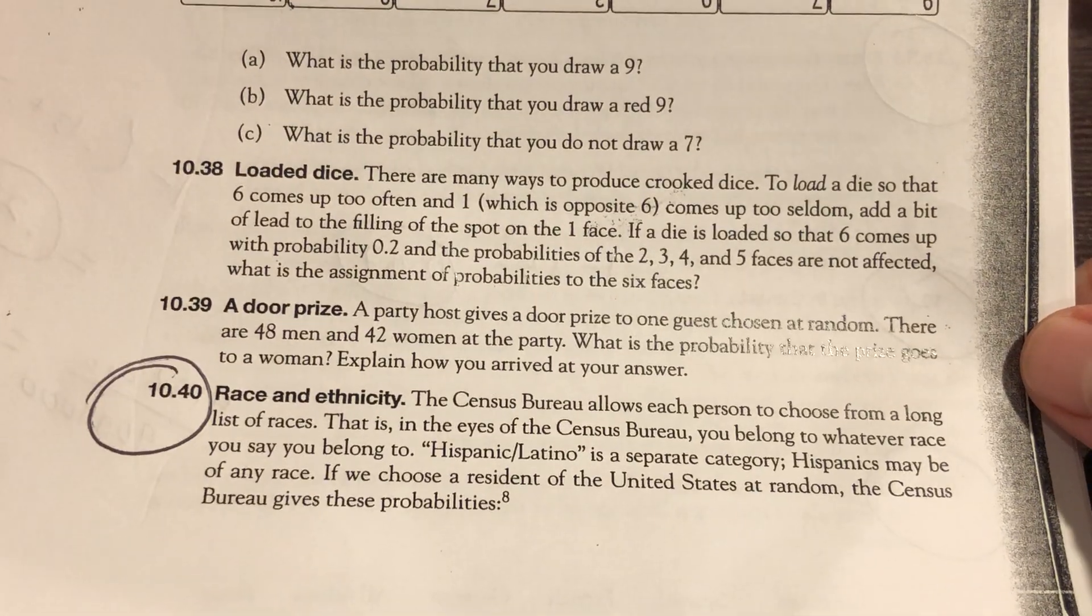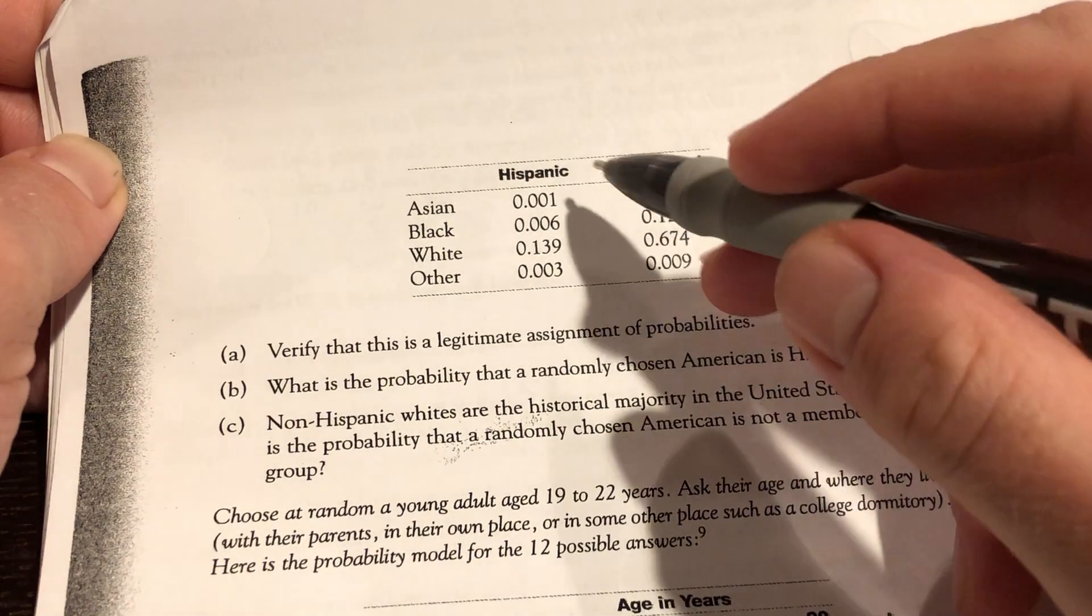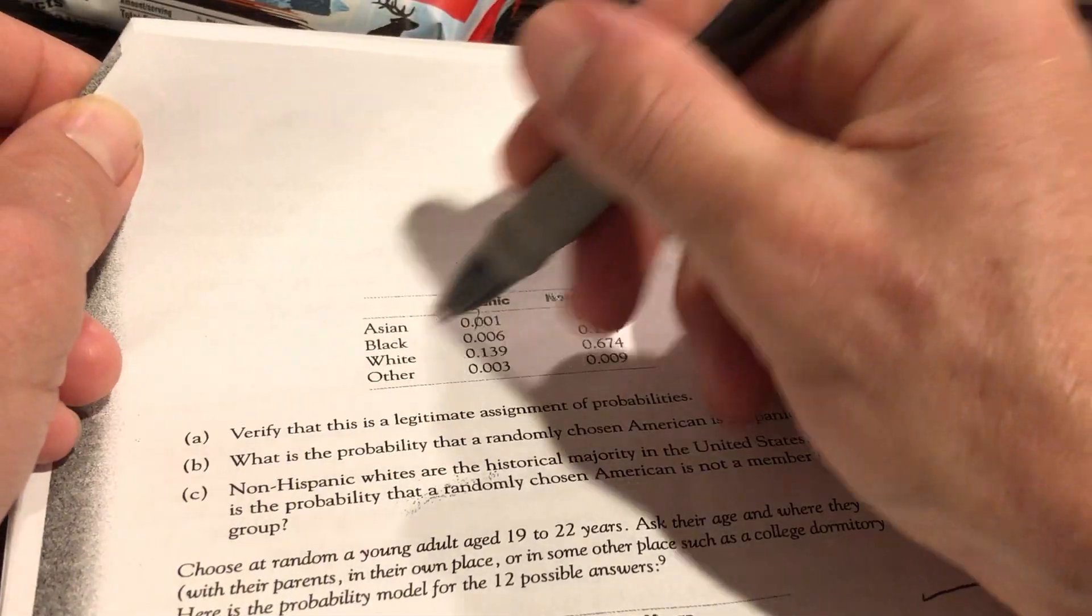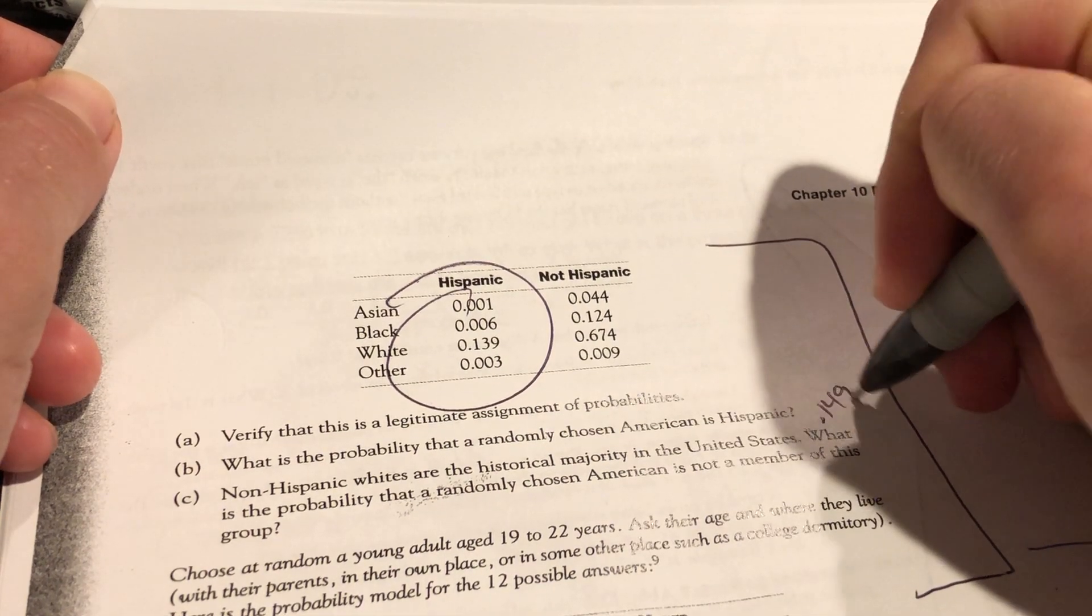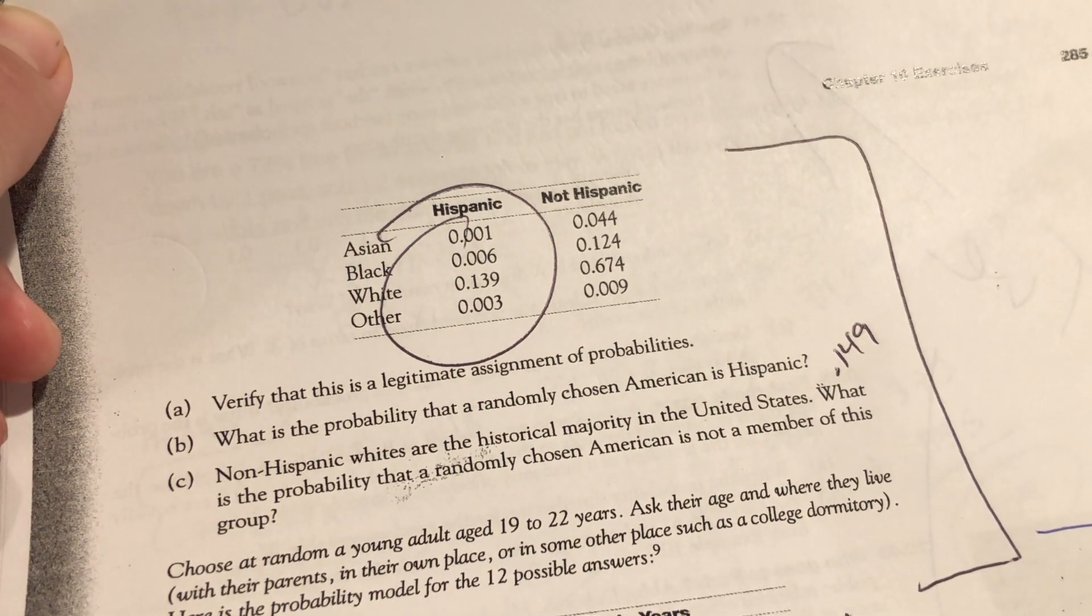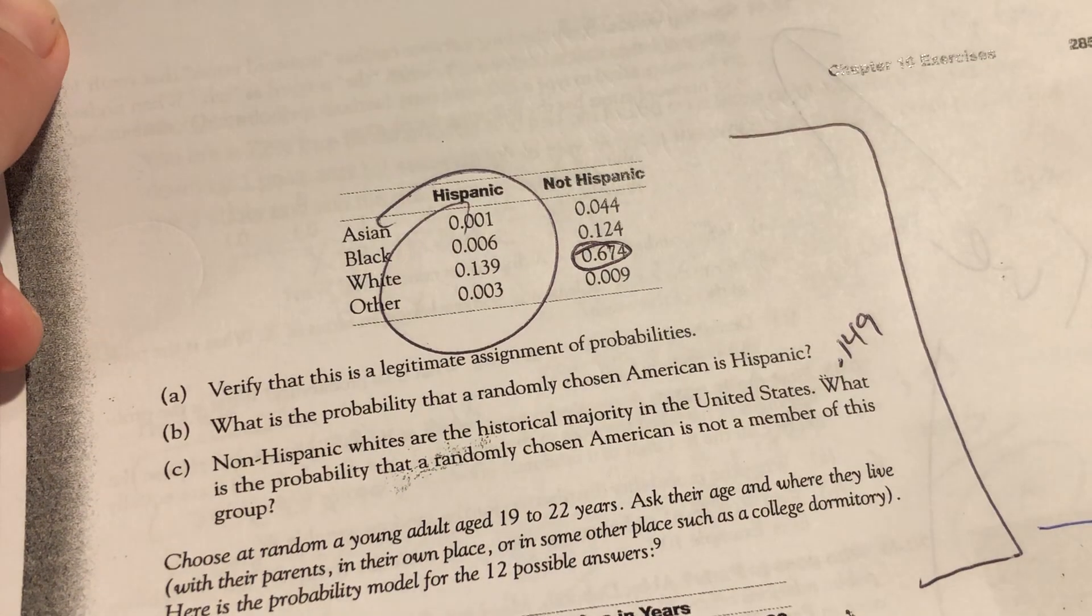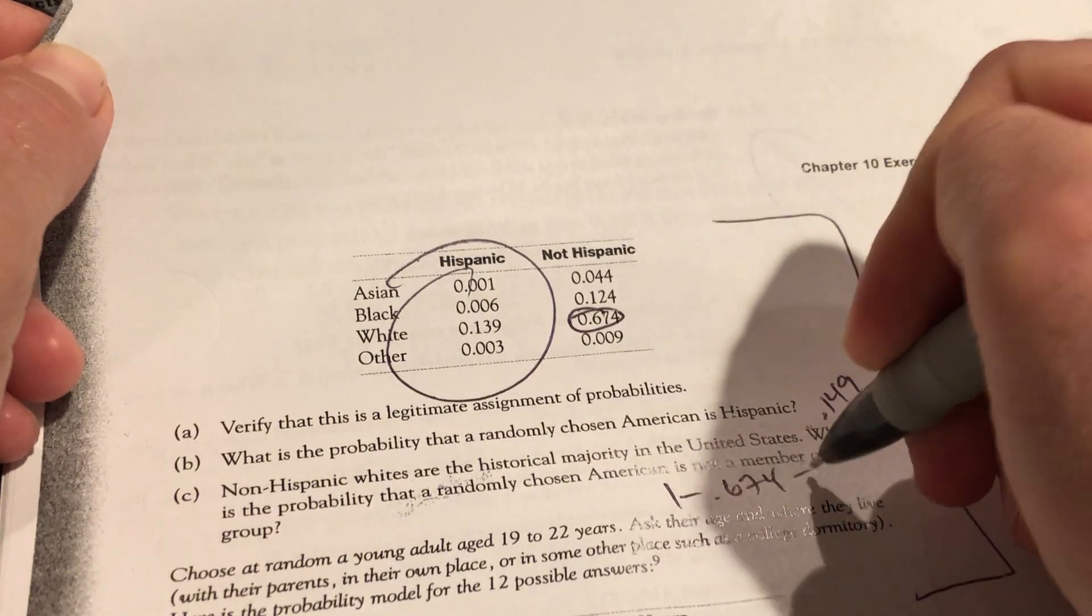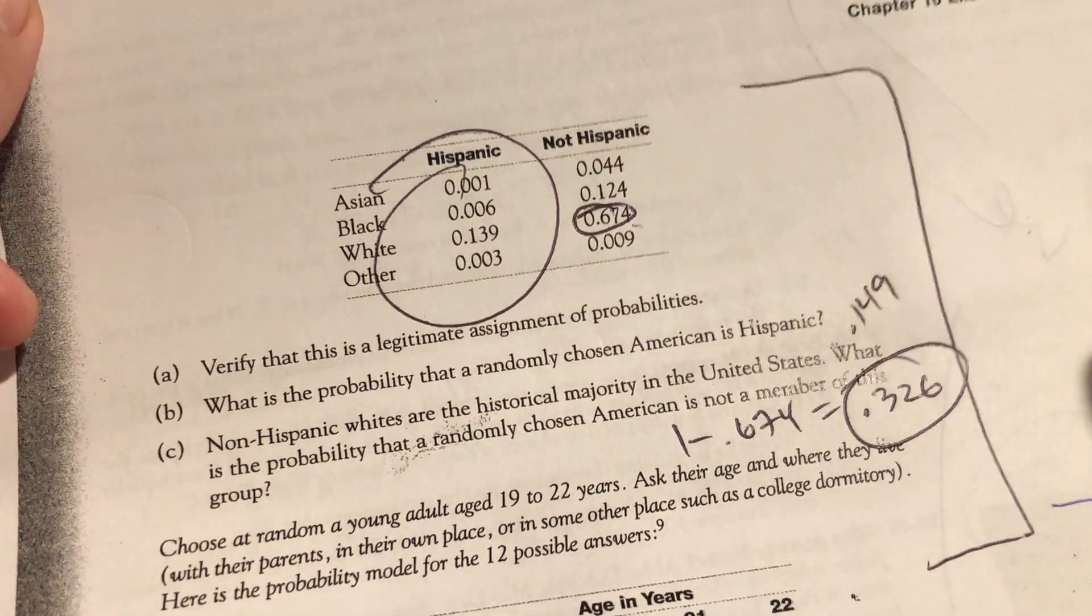Talking about race. Census Bureau allows each person to choose from a long list of races. Verify it's a legitimate one. Add them all up. You're going to get one. What's the probability a randomly chosen American is Hispanic? Add up all of those, and I think if you add up that column, you get 0.149. Non-Hispanic whites are a historical majority in the U.S. What's the probability a randomly chosen American is not a member of this group? So one minus that cell right there, that number. Think of it like an Excel cell. One minus that one.